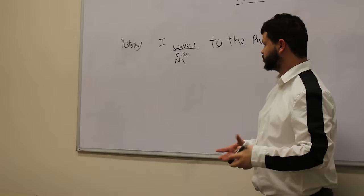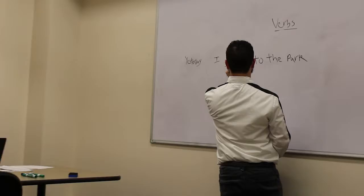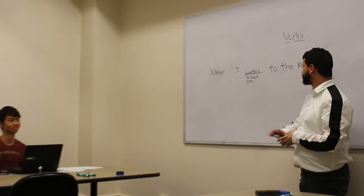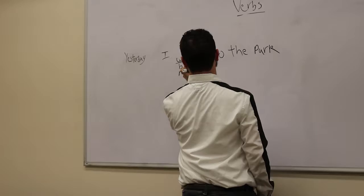So what should we do with the next one? I biked to the park. Good. What about our last verb? I run to the park. One. Unlike our previous two verbs, it's actually an irregular verb. So we would actually change this to I ran to the park.